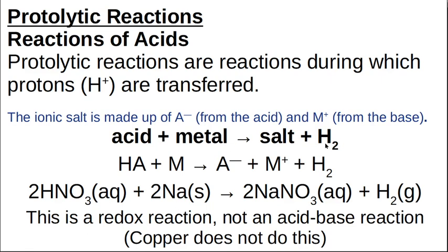Acid plus a metal giving you a salt and hydrogen gas is technically a redox reaction, not an acid-base reaction, because the metal — remember in redox, oxidation is loss, reduction is gain — this metal is going to lose two electrons and become a metal ion, and the protons in the acid are going to gain electrons and become hydrogen gas. So in all of these general reactions, they can be represented as H (the proton for an acid) plus its anion, and a metal gives you the anion, the metal cation, and hydrogen gas.